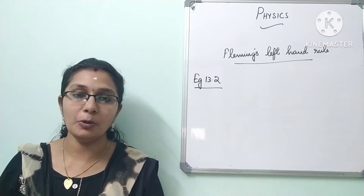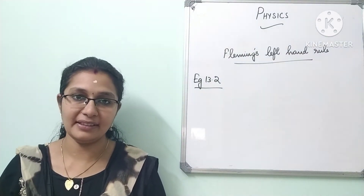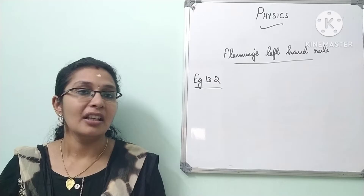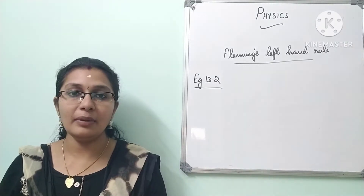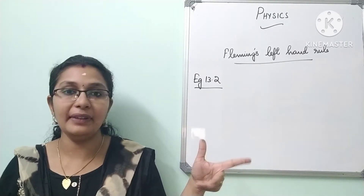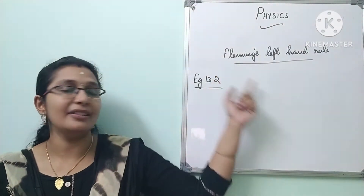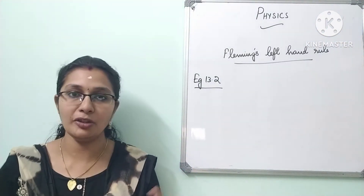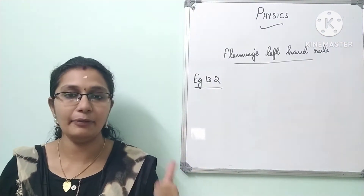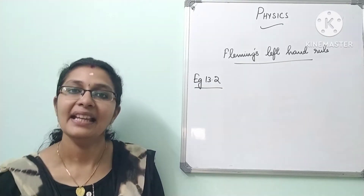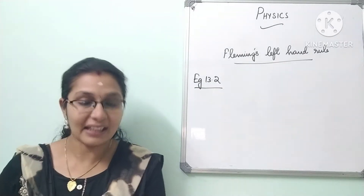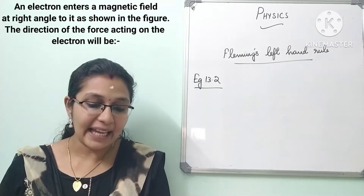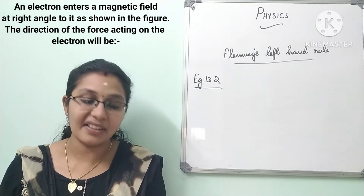Example 13.2 is what we are going to discuss in this session. First, read the question and try to keep your fingers based on Fleming's Left Hand Rule, then we will turn our fingers according to the question and find the direction. So let's first read the question: an electron enters a magnetic field at right angles to it as shown in the figure.